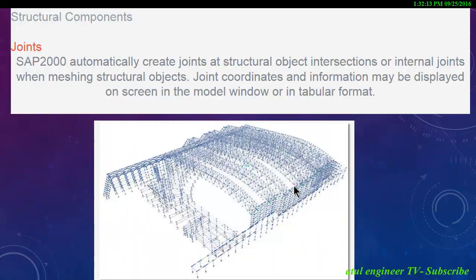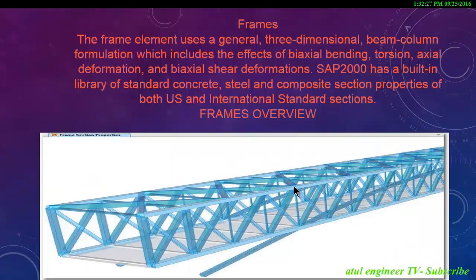SAP 2000 automatically creates joints at structural object intersections or as internal joints when meshing structural objects. Joint coordinates and information may be displayed on screen in the model window or in tabular format.